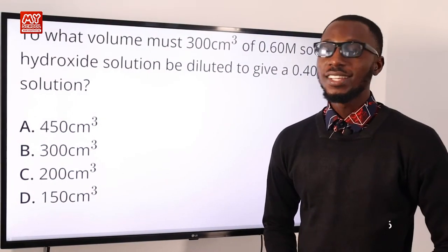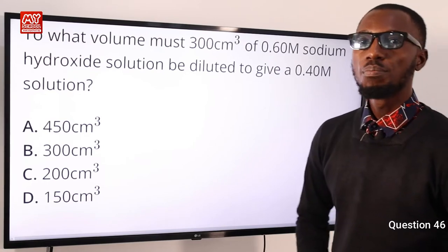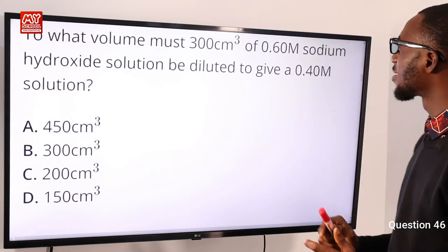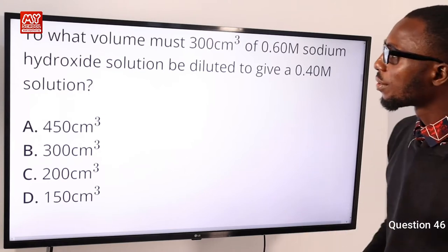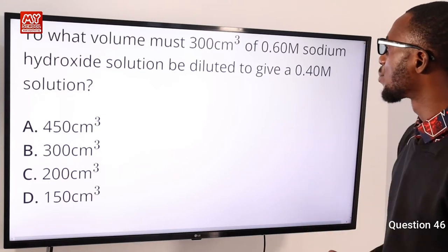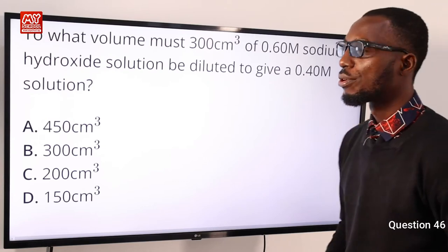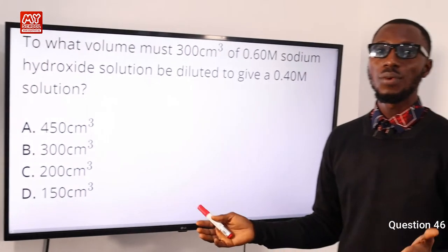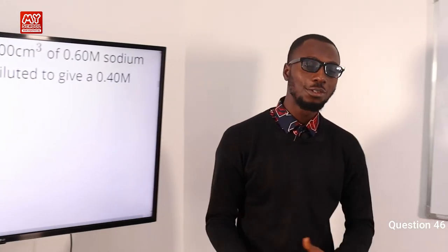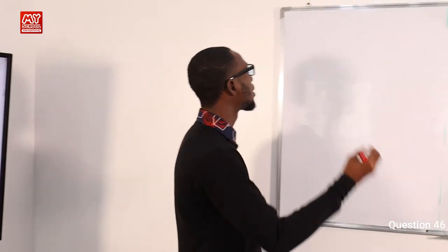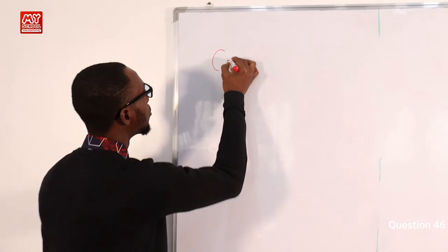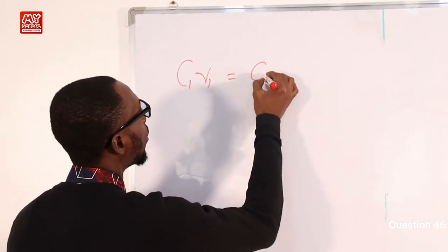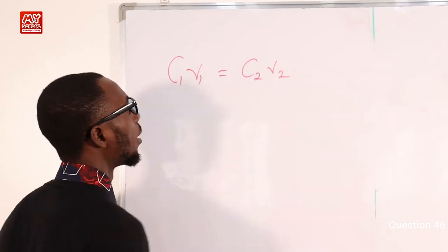Question 46: To what volume must 300 cm³ of 0.60 molar sodium hydroxide solution be diluted to give a 0.40 molar solution? This is easy to tackle using the principle of dilution: initial concentration × initial volume = final concentration × final volume.